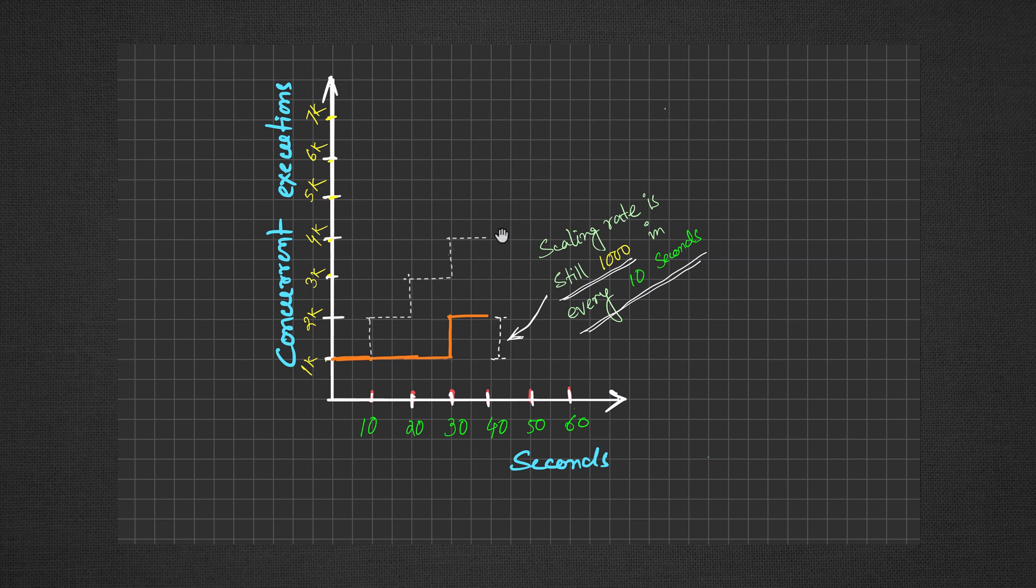Lastly, Lambda does not accrue unused portions of your concurrency scaling rate. For instance, if Lambda needs to scale up here, it will still scale up by maximum 1000 concurrent executions. The scaling rate is always 1000 every 10 second interval.